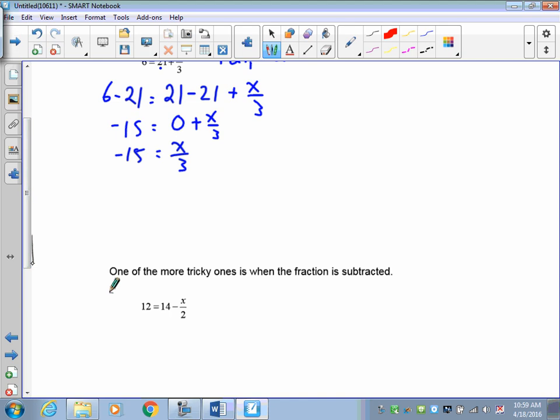So the next thing I need to do is since I'm dividing by 3 here, I have to multiply by 3. So negative 15 times 3 and x over 3 times 3. Do it to both sides. 3 divided by 3 is 1. 15 times 3 is 45, and a positive 3 times a negative 15 is a negative 45. So x is equal to negative 45.